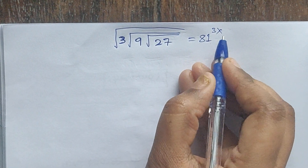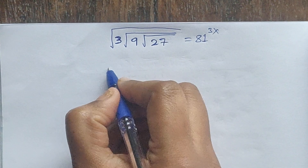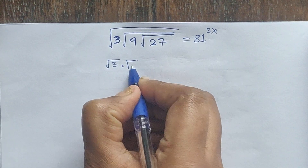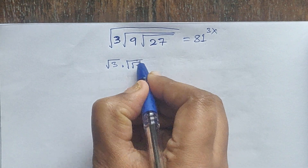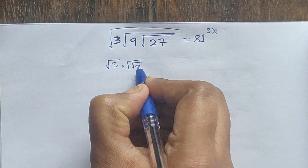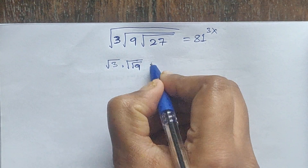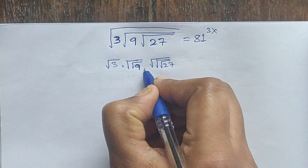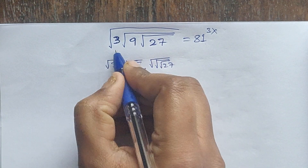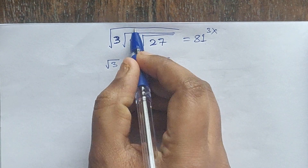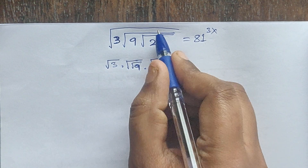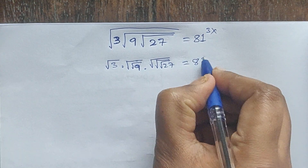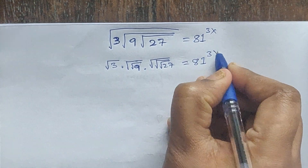First, square root of 3 times square root of square root of 9 times square root of square root of square root of 27. The first one has one square root, the second one has two square roots, and the third one has three square roots. This equals 81 to the power of 3x.